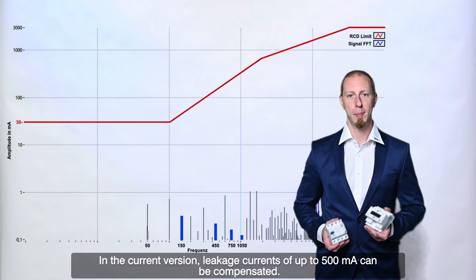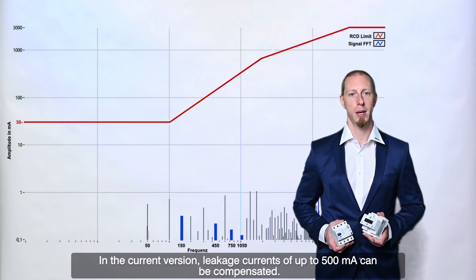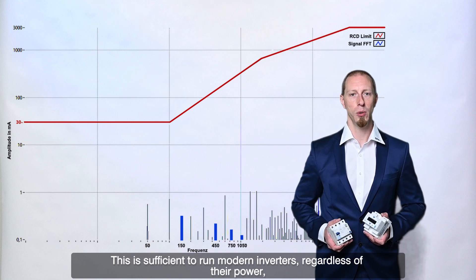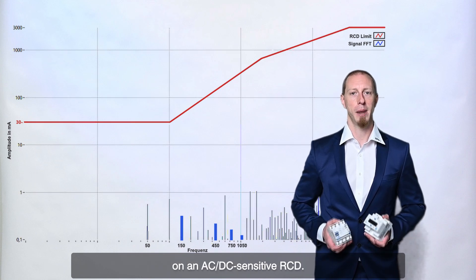In the current version, leakage currents of up to 500 mA can be compensated. This is sufficient to run modern inverters, regardless of their power, on an AC-DC sensitive RCD.